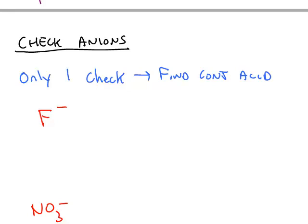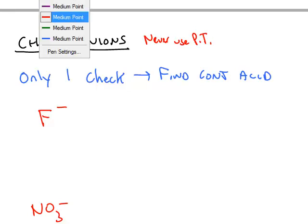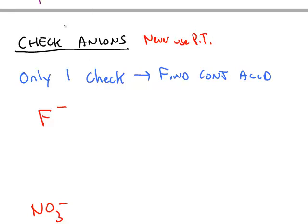For the anions, you never check the periodic table. Unlike the cations, where the first thing to do was to look on the periodic table, there's only one check you do with anions, and that's to find the conjugate acid.